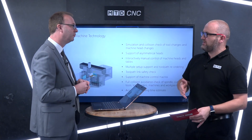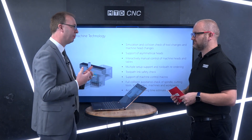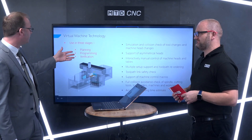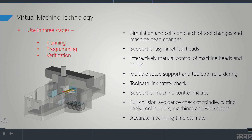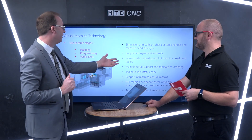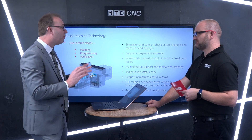To conclude for people who may or may not be aware of digital twin — why would they use it, and why Tebis? Digital twins promote safe, efficient processes as the main benefit. The virtual machine is used not just in the verification stage like most systems, but also in planning and programming. It's going to give you collision checking against all your tool changes, even machine head changes — asymmetrical heads will be considered. You're able to interactively control the machine within the verification environment. Multiple setups is a very important point.